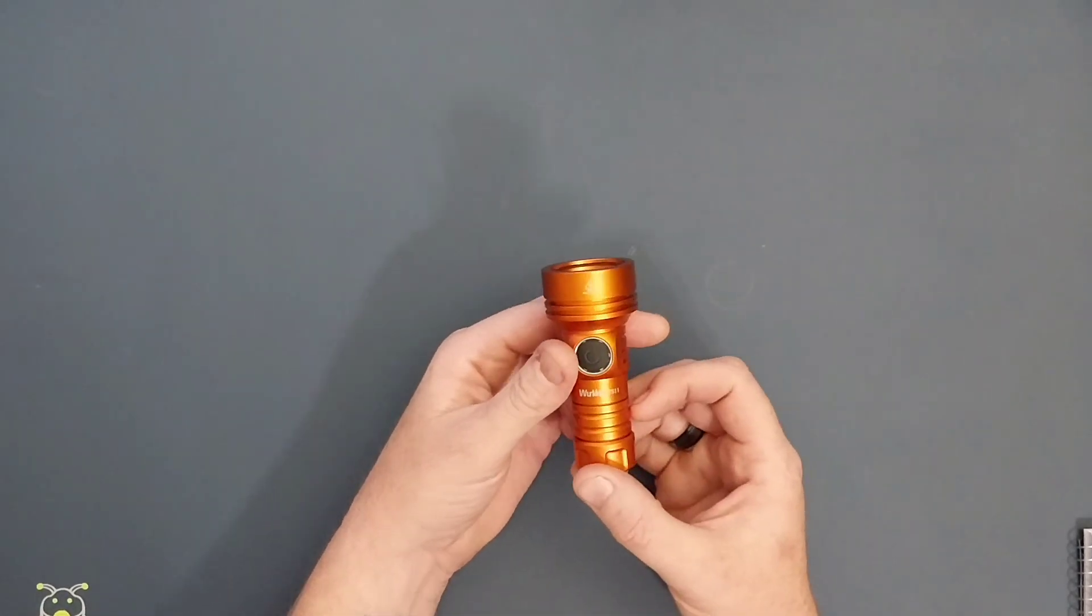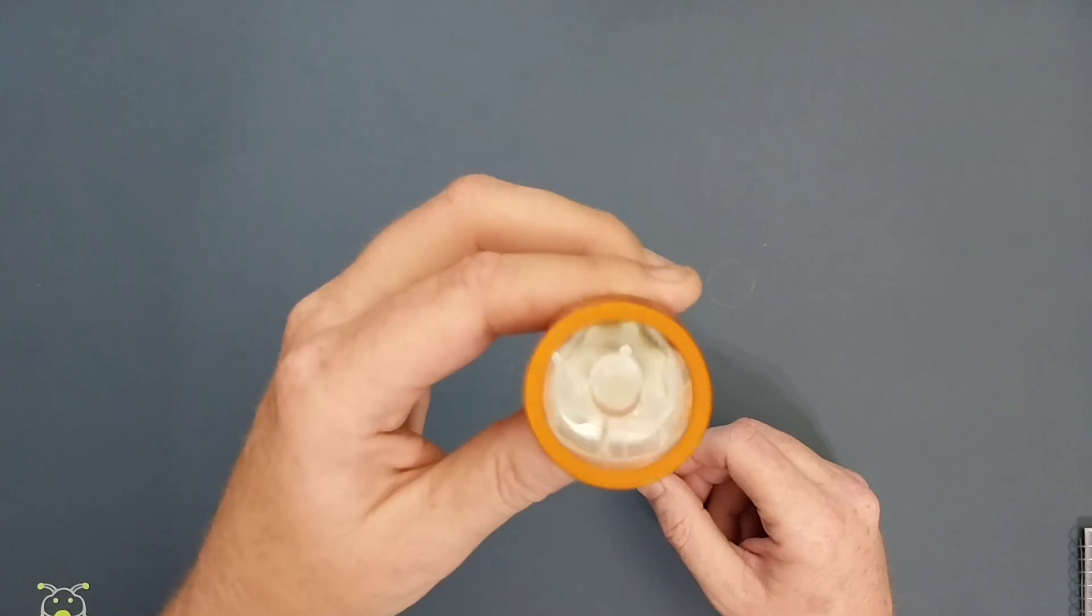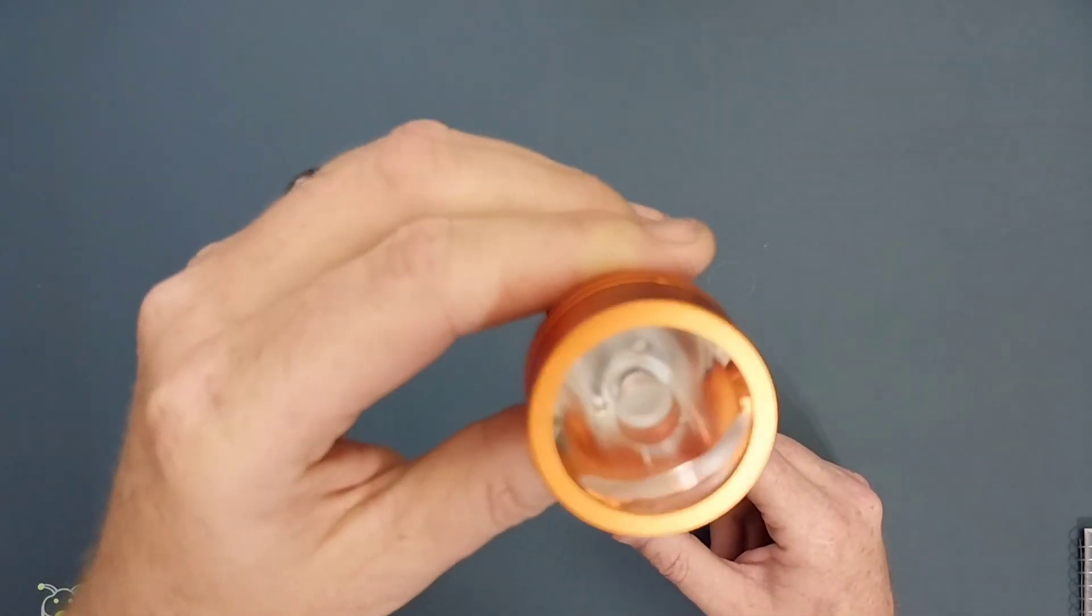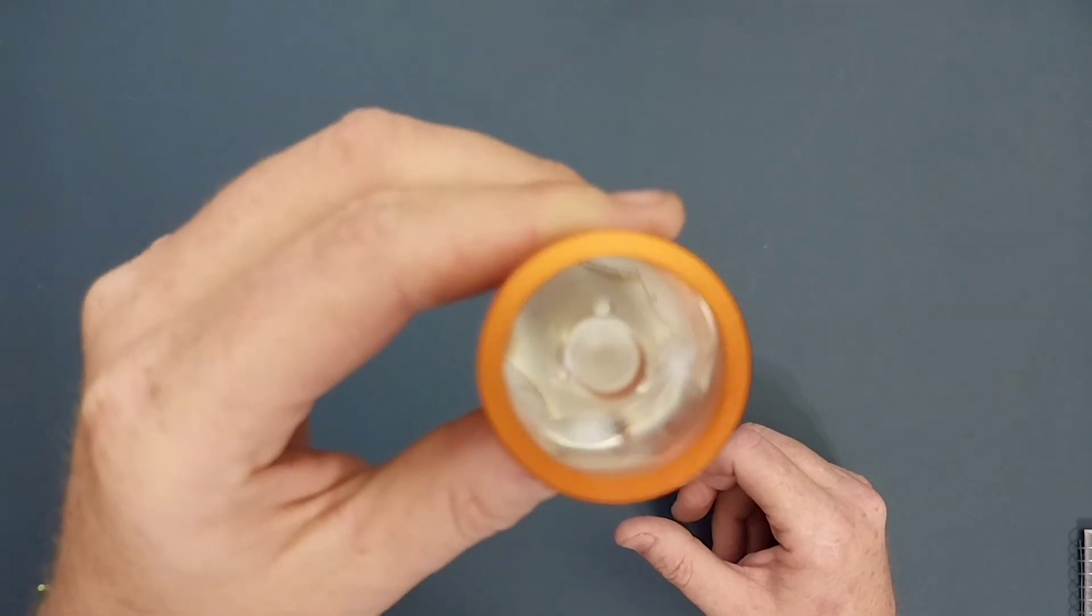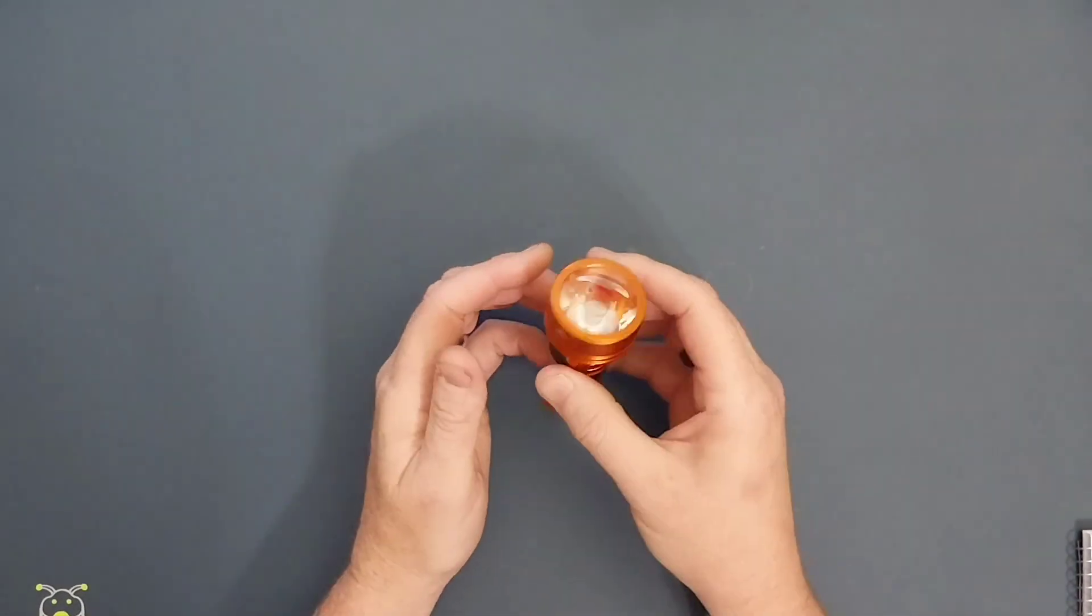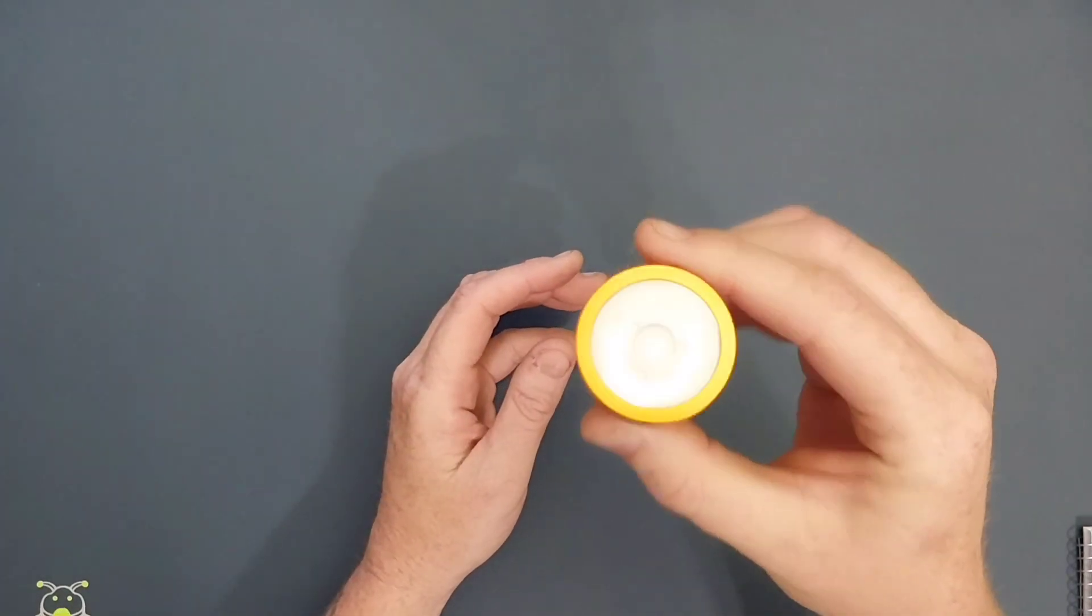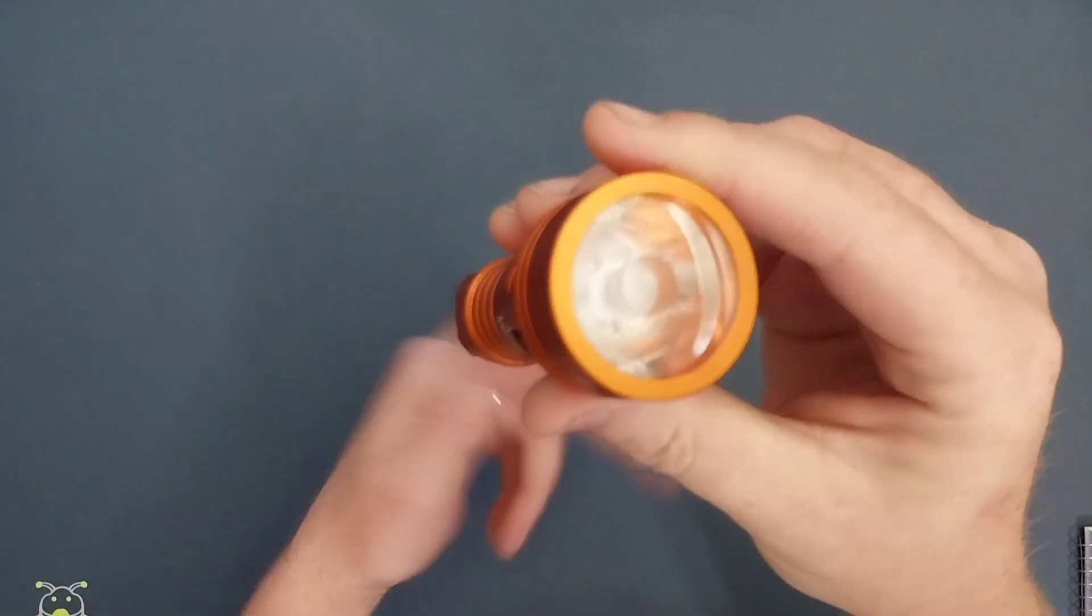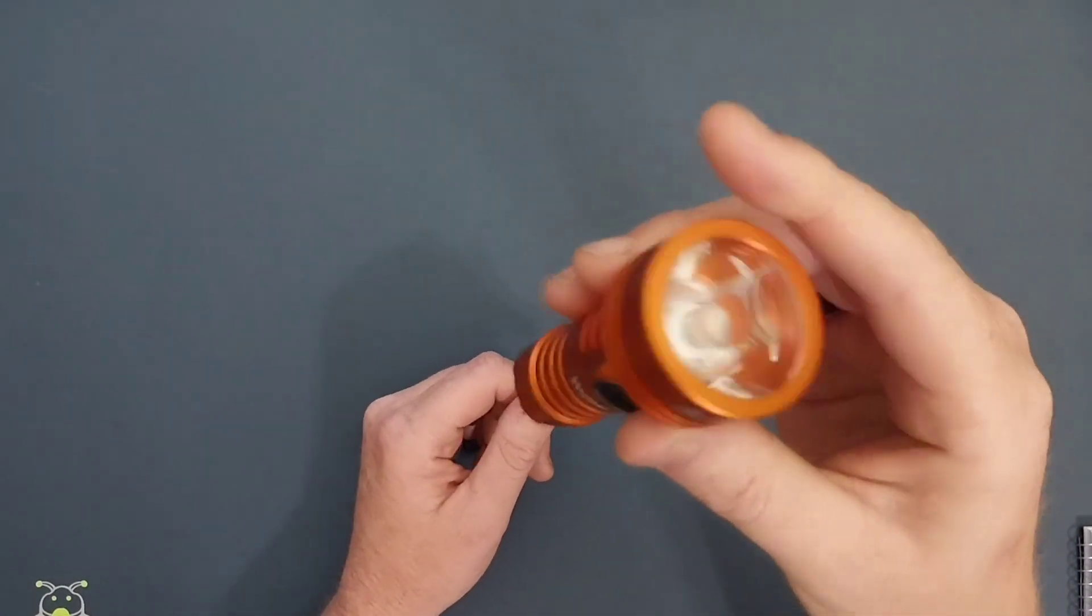First off, it comes with your SFT40 LED right there down the barrel. Super cool, super mini. It's got the TIR optic lens so it's definitely going to be a little thrower. We'll see a little bit later on when I do the night shots.